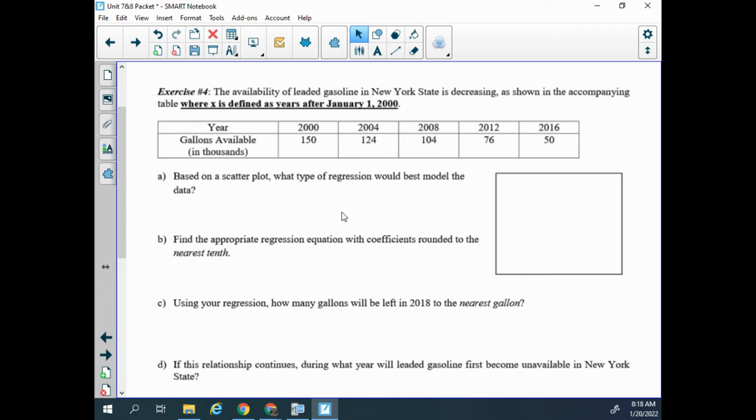So instead of using those years for our X values, we're going to be using that 2000 is zero years after 2000, 2004 is four years after, then 12 and 16. So we're transforming the data, basically subtracting 2000 from it and using these simpler numbers to make our equation.